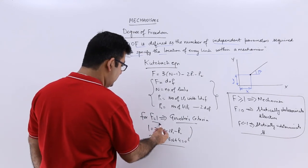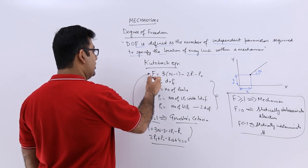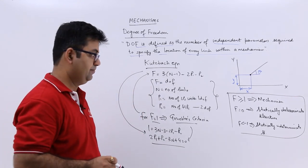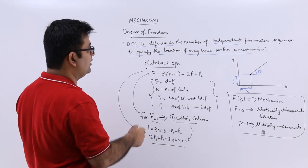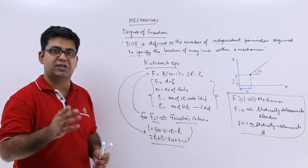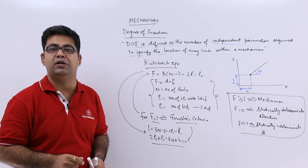Make a note of this, that is you put F equal to 1 into this and you get in return a Grubler's criteria equation. This is how we understand the degrees of freedom. Now let's move on to the next topic and talk about the Grashoff's condition.